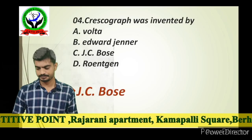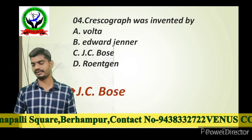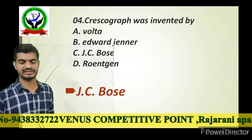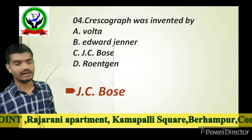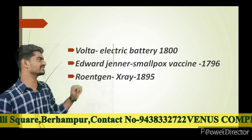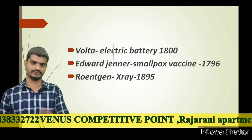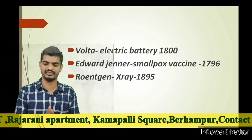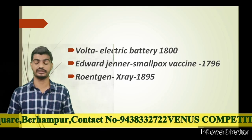Next question: the crescograph was invented by JC Bose. Edward Jenner — also known as the Father of Immunology — invented the smallpox vaccine. Volta invented the electric battery. X-rays were discovered by Röntgen in 1895.